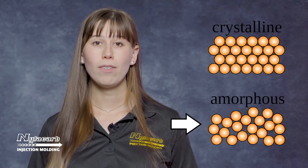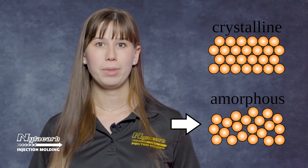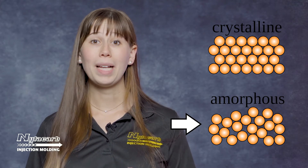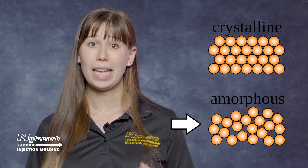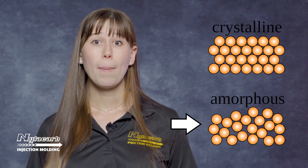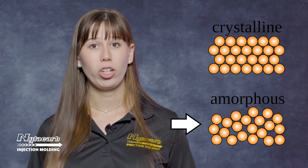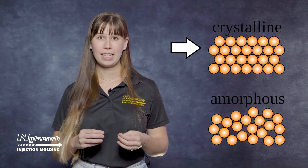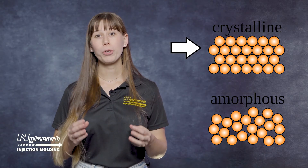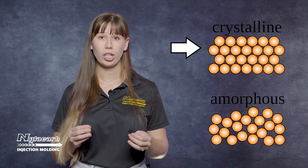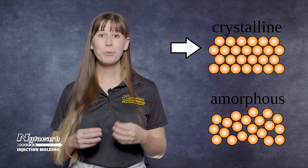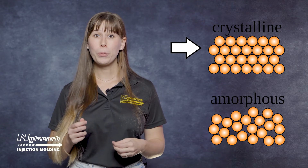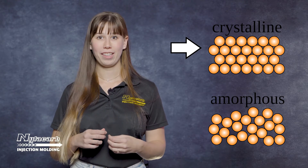Amorphous thermoplastics have a more randomized molecular structure and include plastics such as ABS, polycarbonate, and acrylic. Crystalline thermoplastics have a more ordered molecular structure and include plastics such as nylon, polypropylene, and polyethylene.